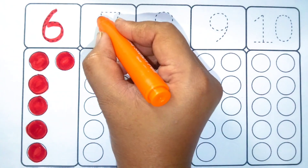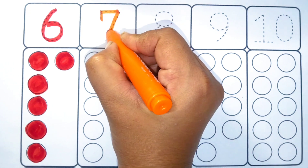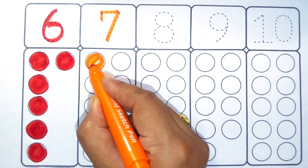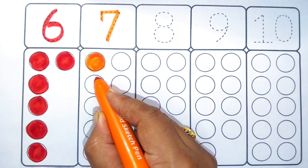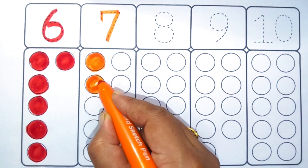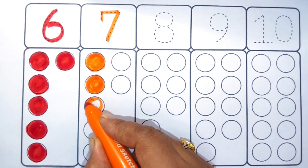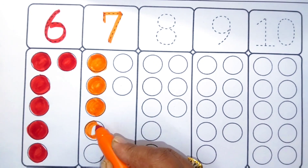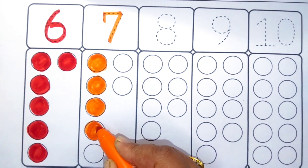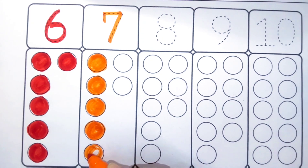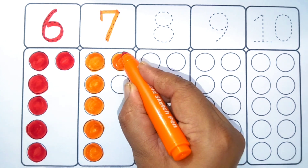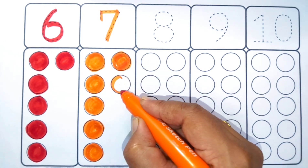Orange color. Seven. One, two, three, four, five, six, seven.